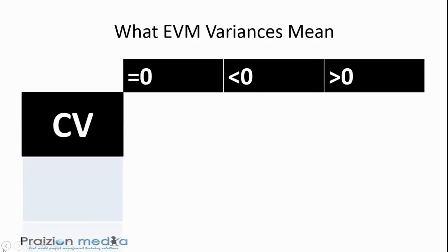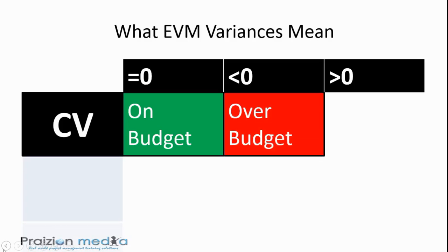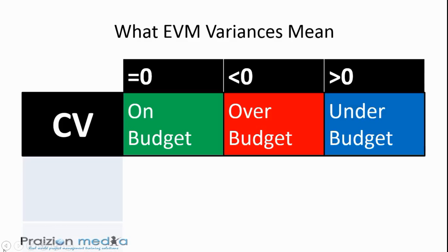If you are dealing with a cost variance that is equal to $0, that means you are right on budget. Now, if your cost variance is less than $0, it means it's negative, right? Negative is bad. That means you are over budget. If your cost variance is greater than $0, greater than $0 means positive, right? Positive. And that means you are under budget.